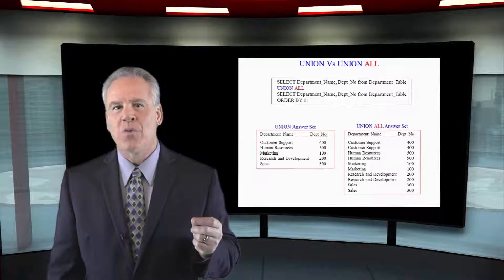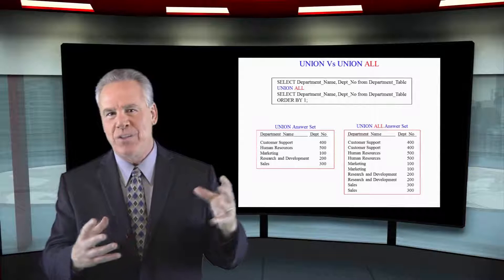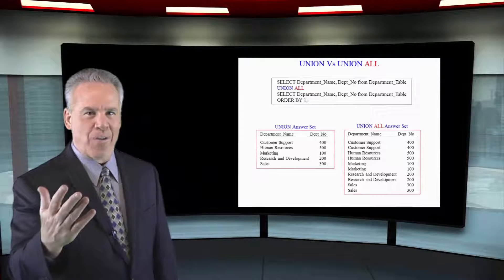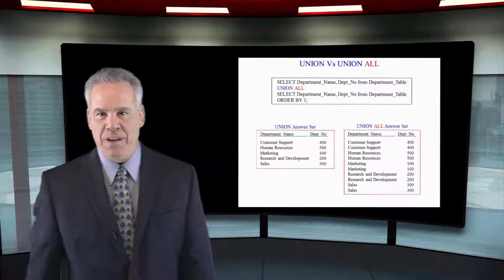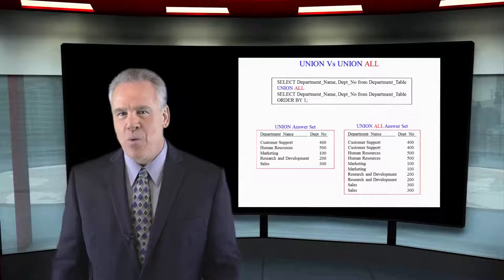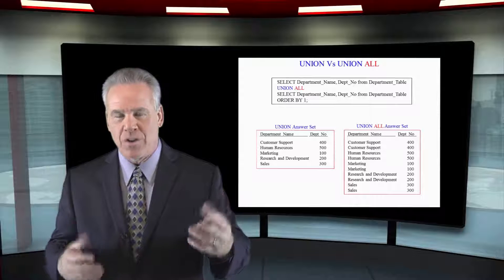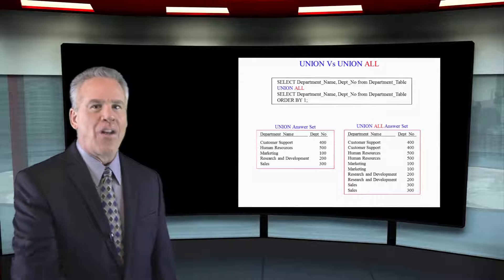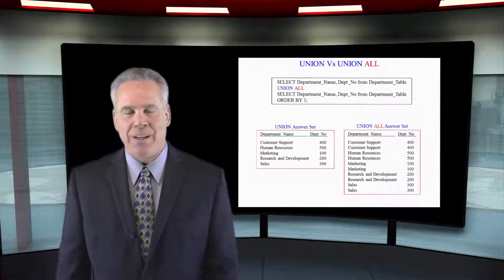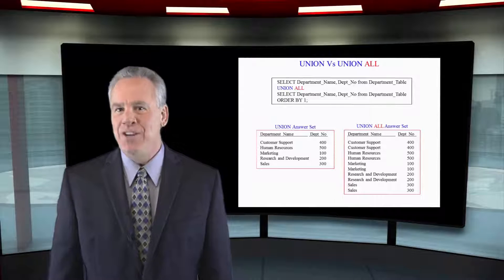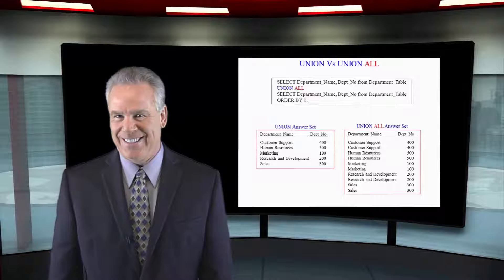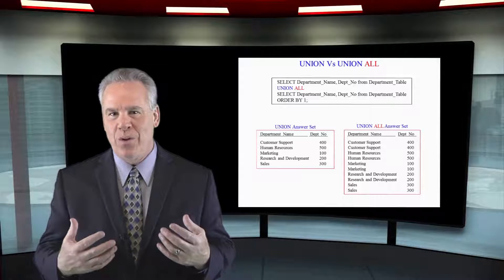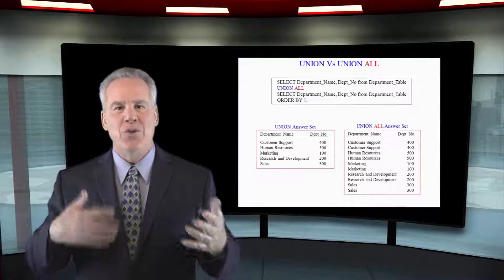Sometimes you're going to want to combine two different tables together. You could do a union or a union all, but a union will eliminate the duplicates. If you know there are no duplicates, or you want to group by those columns, a union all will be much faster because there is no elimination of duplicates.